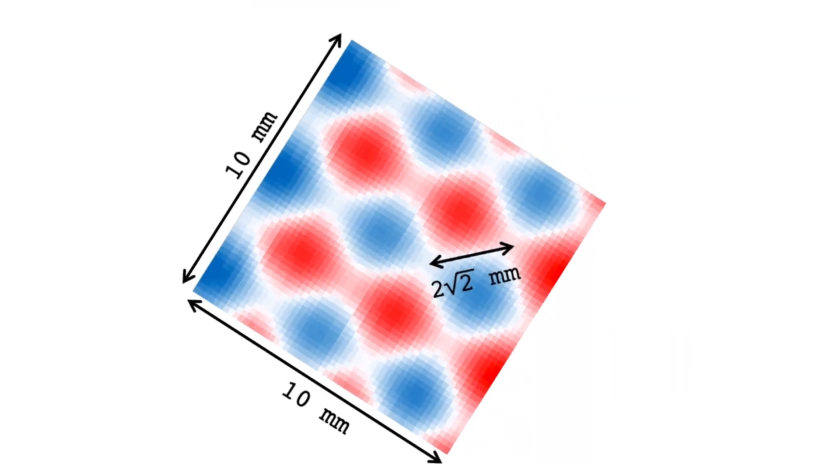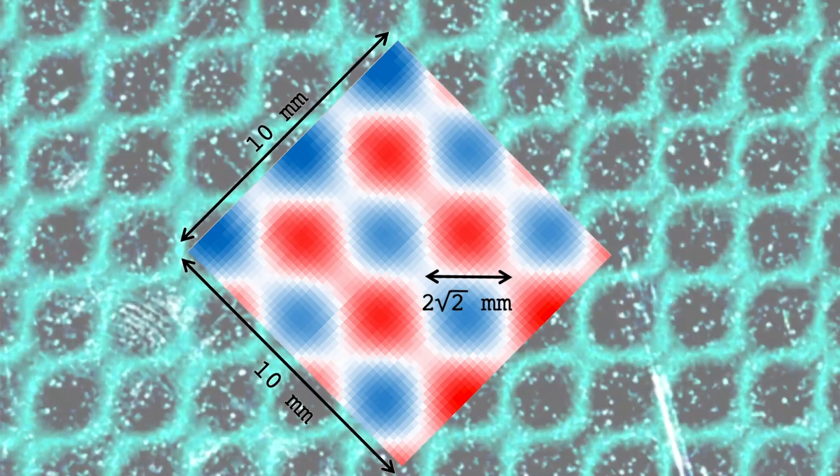Thus, a 45 degrees rotated checkered magnetic pattern is generated. These results suggest that this magnetic superposition method can be used as an alternative way to create magnetic lattice patterns.